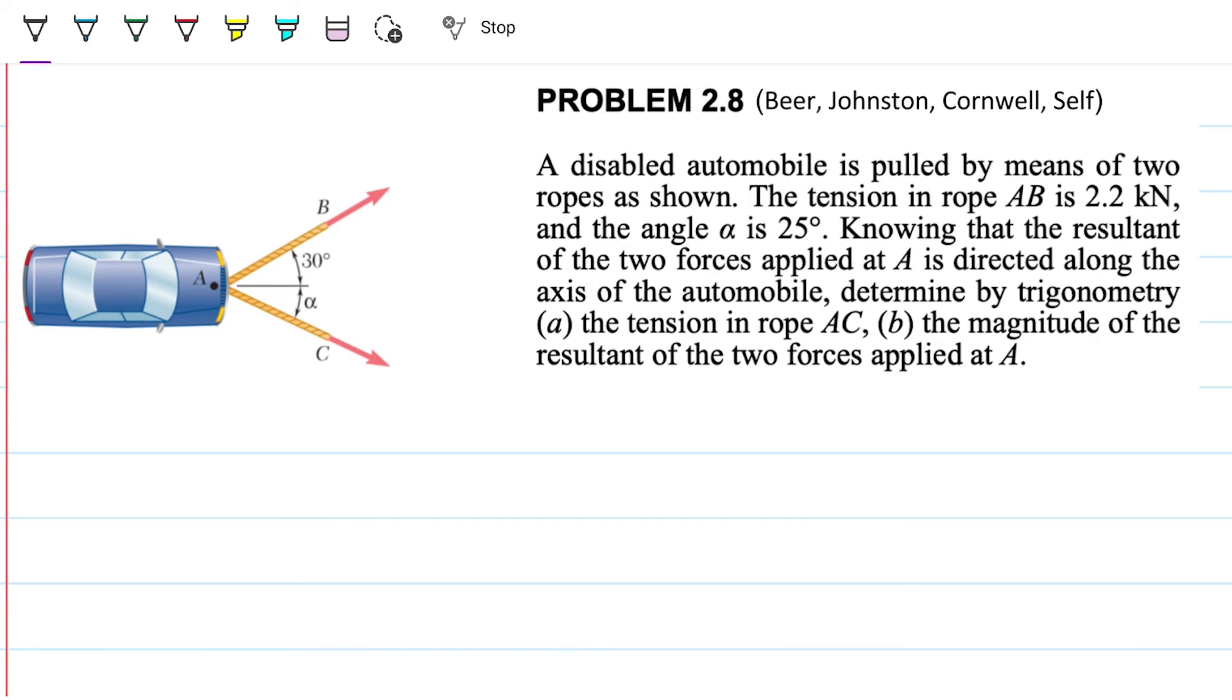Hello guys and welcome back to Engineering Hack, where we're trying to solve engineering problems in a way that's hopefully easy to understand. Today, still in the realm of statics, straightforward problem, car being pulled by two ropes. We're going to use force triangles, we're going to use law of sines, we're going to use all the things that we've done plenty here in the channel, so you can check them out here if you haven't yet.